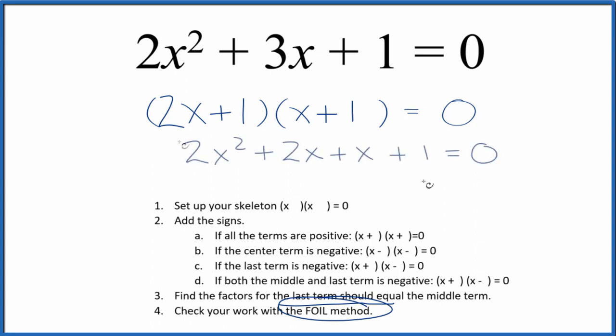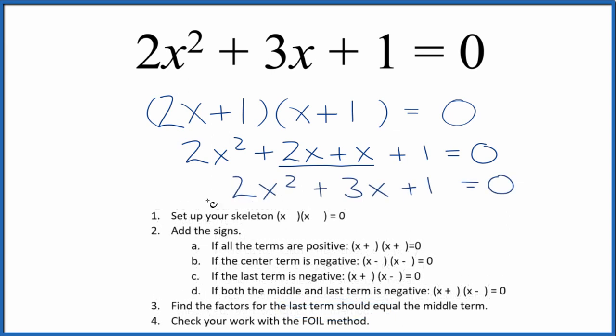And we can just combine these two terms, and we get, and this here, it's the same thing we started with. So we've factored 2x squared plus 3x plus 1 correctly.